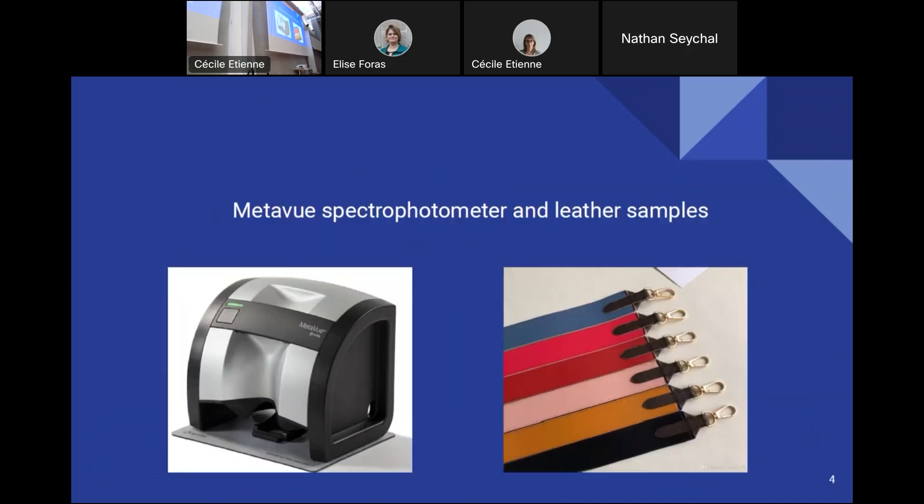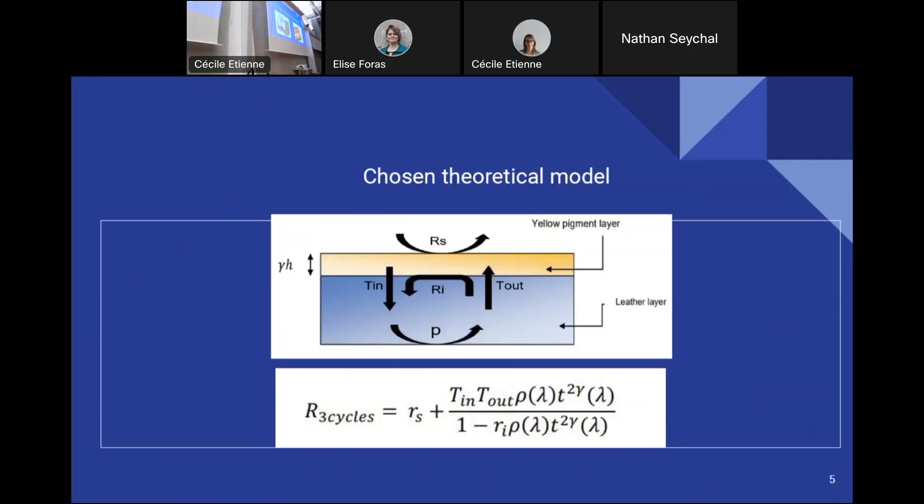First of all, we were sent Hermès leather samples which had been artificially aged. For each leather, we had three samples corresponding to different aging phases: zero, one or three aging cycles. And for each sample, we measured the spectral reflectance using the MetaView spectrophotometer that you can see on the picture.